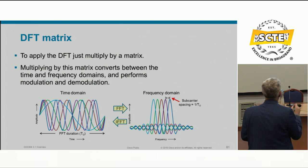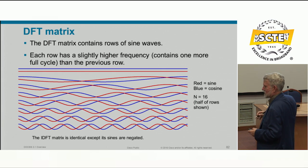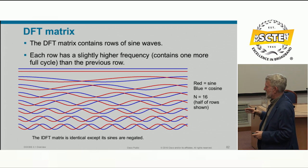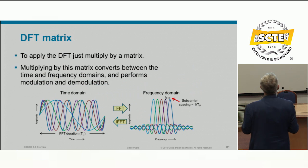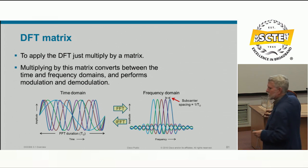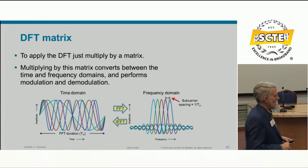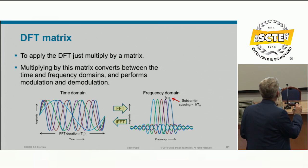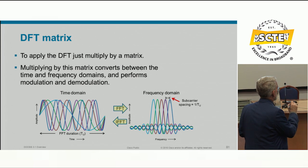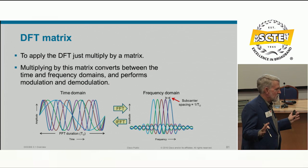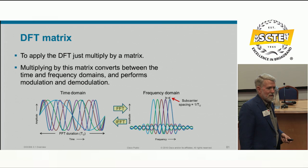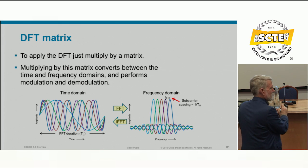The IDFT or IFFT at the transmitter gives us the equivalent of racks of individual QAM modulators — up to 4,096 — all summed together like a headend combiner, but done entirely on a chip. On the receiver end, the FFT gives the functional equivalent of a splitter feeding 4,096 demodulators, all done on a chip.